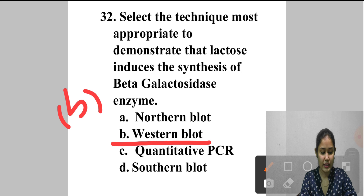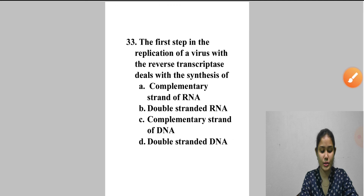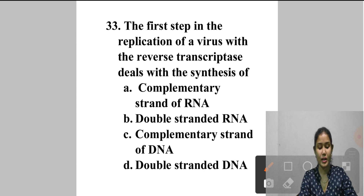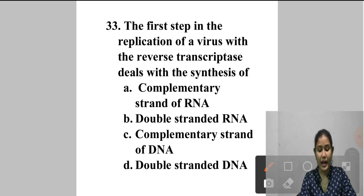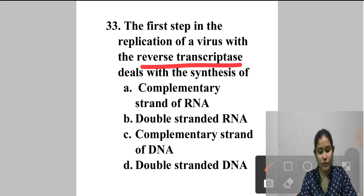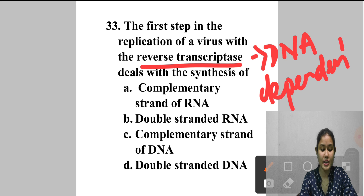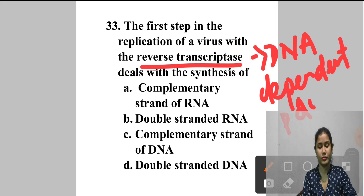Question 33: The first step in the replication of a virus with reverse transcriptase deals with the synthesis of — A. Complementary strand of RNA, B. Double-stranded RNA, C. Complementary strand of DNA, D. Double-stranded DNA. Reverse transcriptase acts as a DNA-dependent polymerase and transcribes the second DNA strand complementary to the first DNA strand. Answer is option C — complementary strand of DNA.